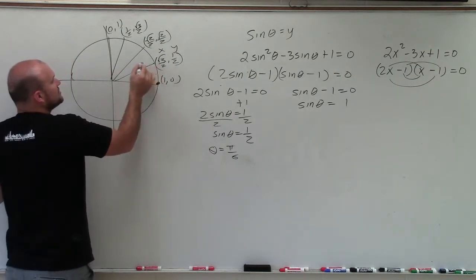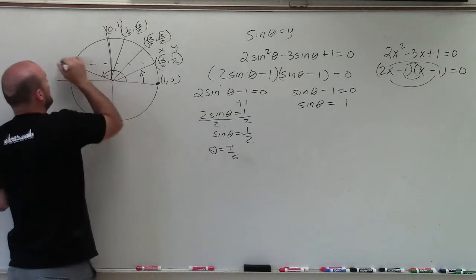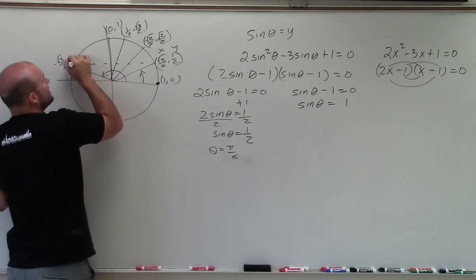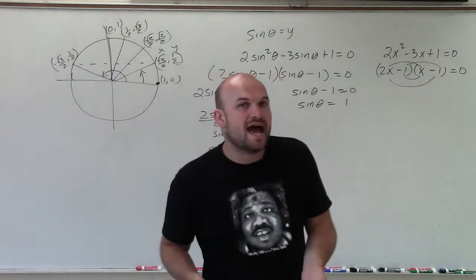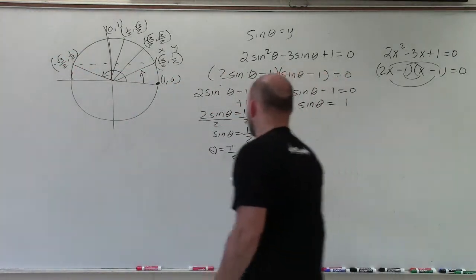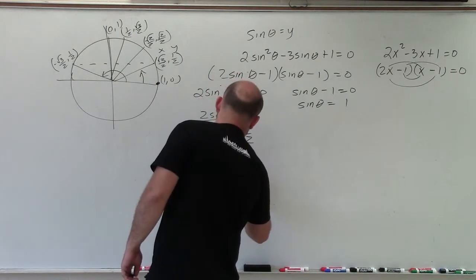However, we also know that that angle is also available there, at 5 pi over 6. Because in the second quadrant, the y-coordinate is still 1 half, it's just the x-coordinate is now negative. So I also have another solution, theta equals 5 pi over 6.